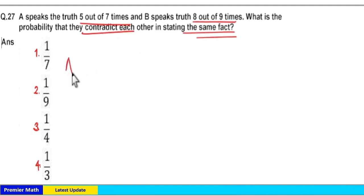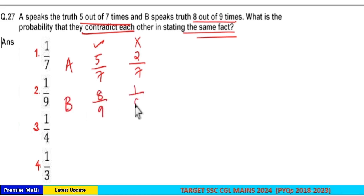Here, when A speaks the truth 5 out of 7 times, he speaks lies 2 out of 7 times. When B speaks truth 8 out of 9 times, he speaks lies 1 out of 9 times. Now probability of error or probability of contradiction by A and B by stating the same fact is equal to: